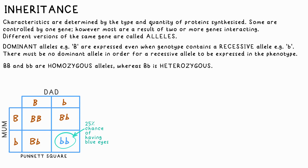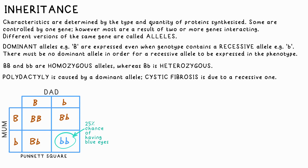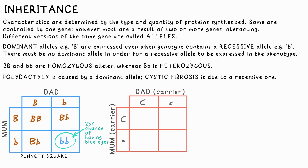Eye color is by the by, but some alleles can result in disorders being inherited. For example, polydactyly — extra fingers or toes — is caused by a dominant allele, while cystic fibrosis is caused by a recessive allele. Even if two parents don't have cystic fibrosis, they could still be carrying the recessive allele, so their child could have the disorder.